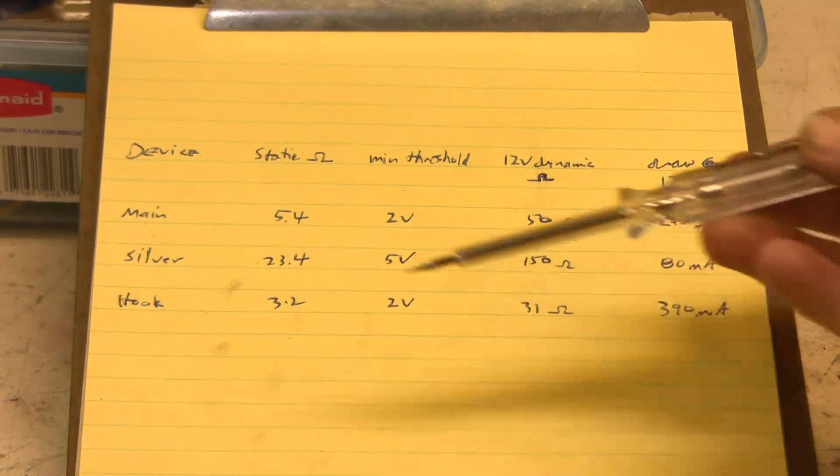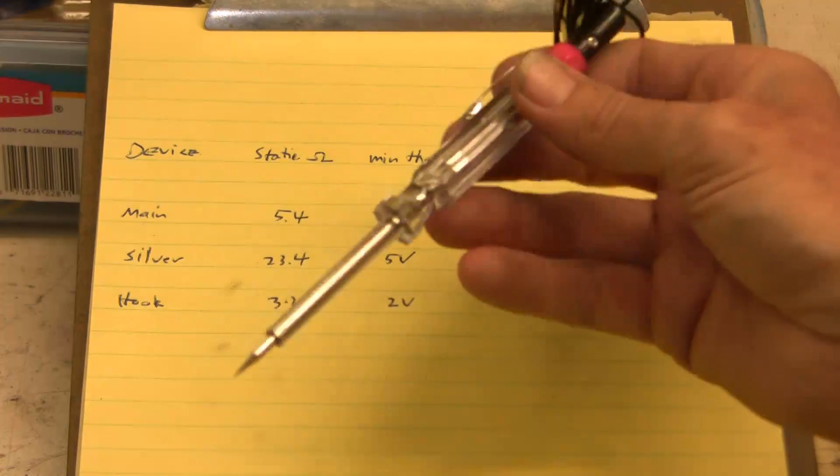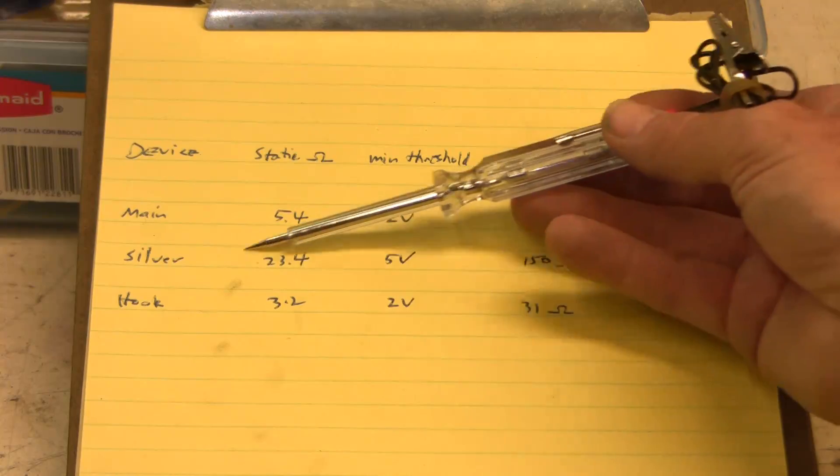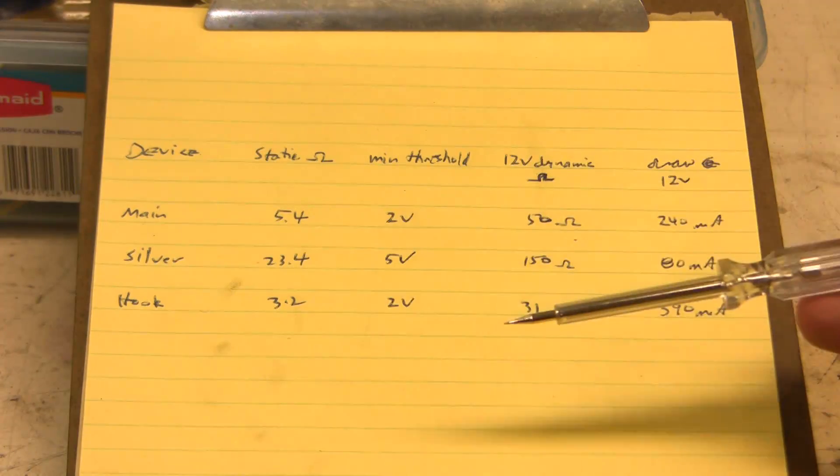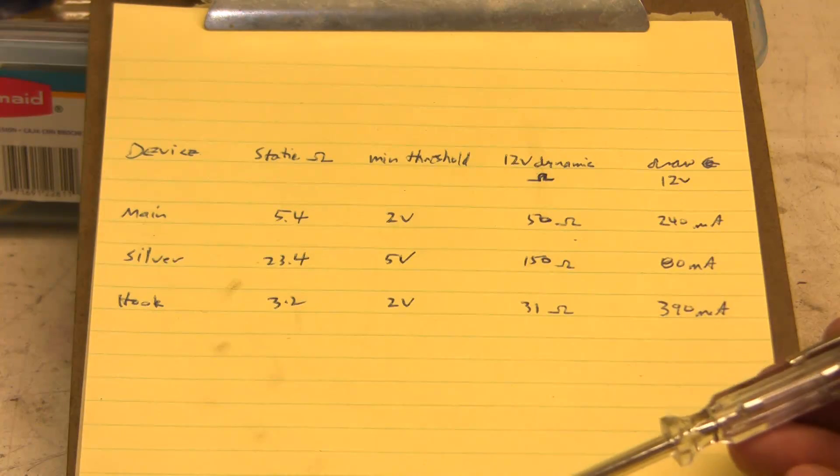Okay, so here are my results. I tested three devices: the main is the first tester I showed you, this is the silver one, and the hook I haven't shown. And if you look at static resistance, the silver one had significantly higher static resistance than the other two and had a higher minimum threshold below which I couldn't see the light turning on.